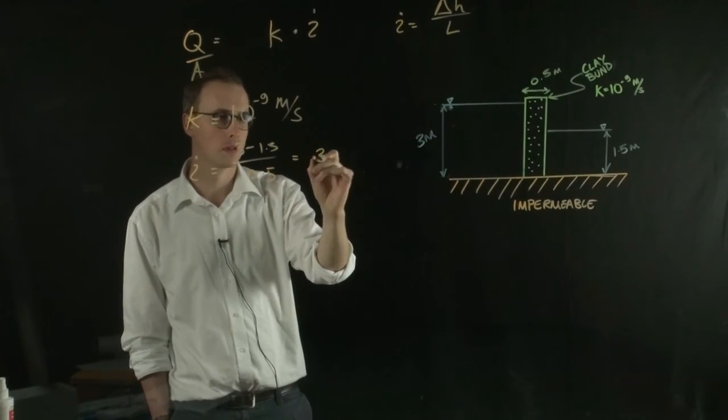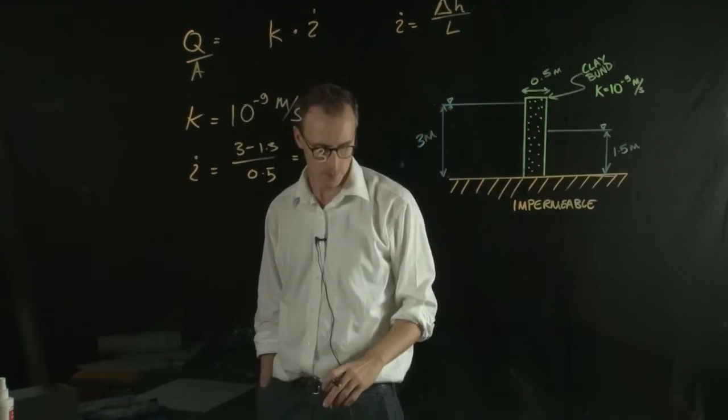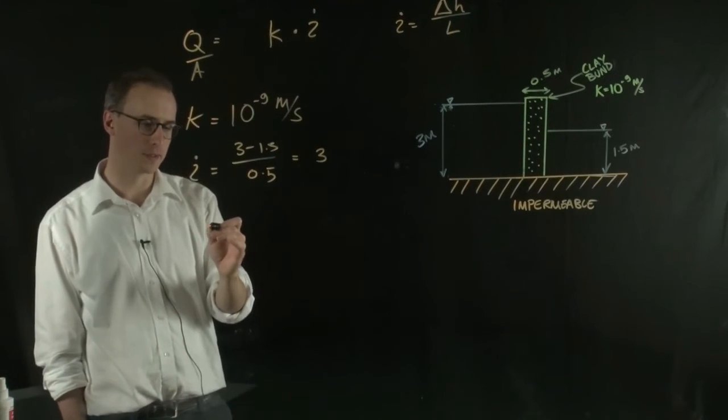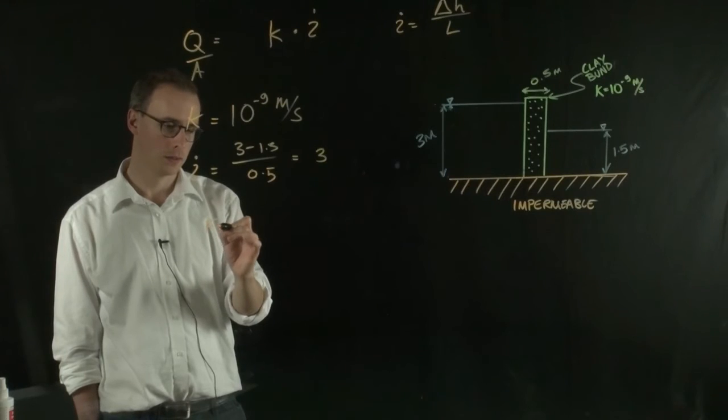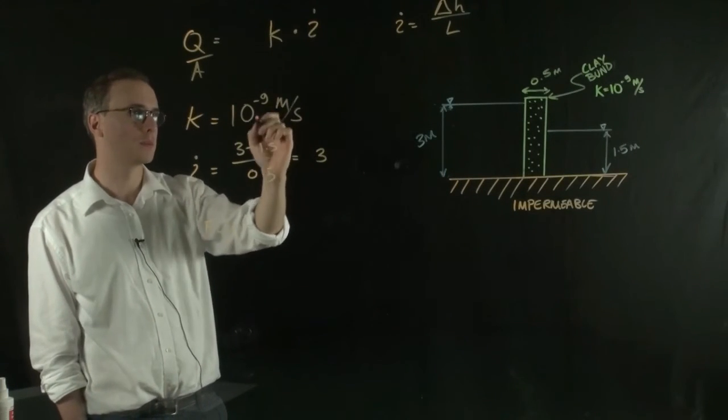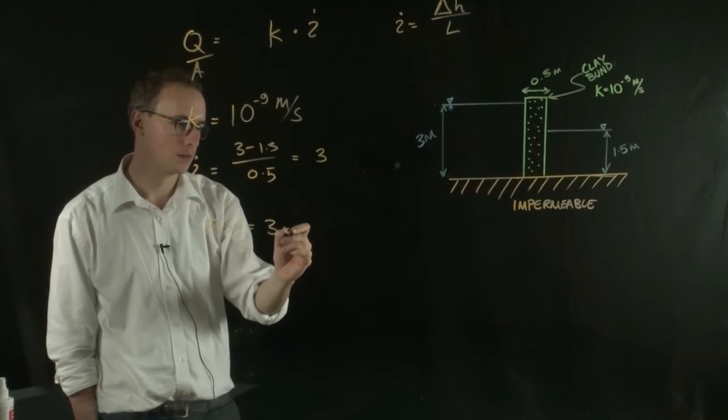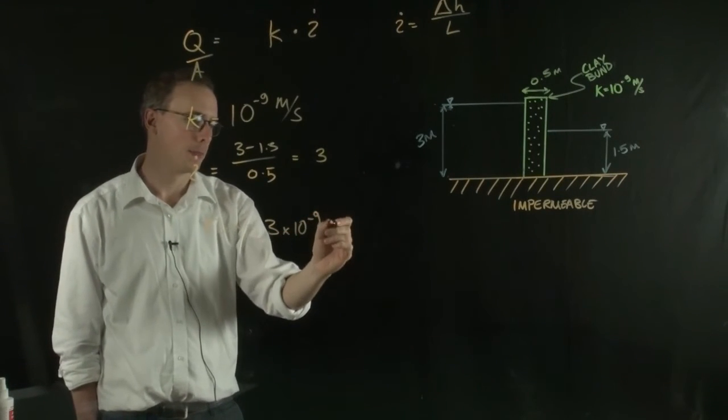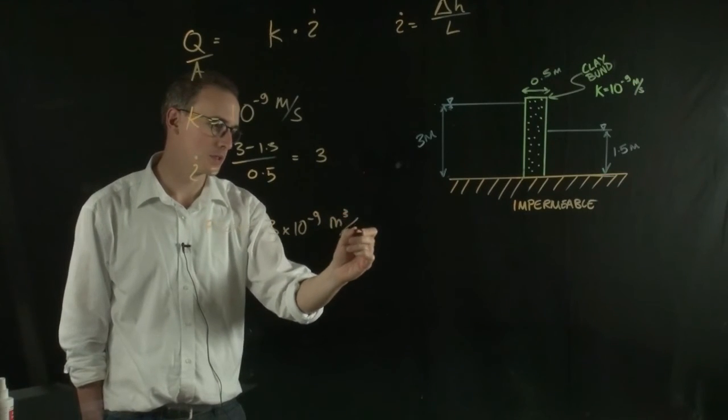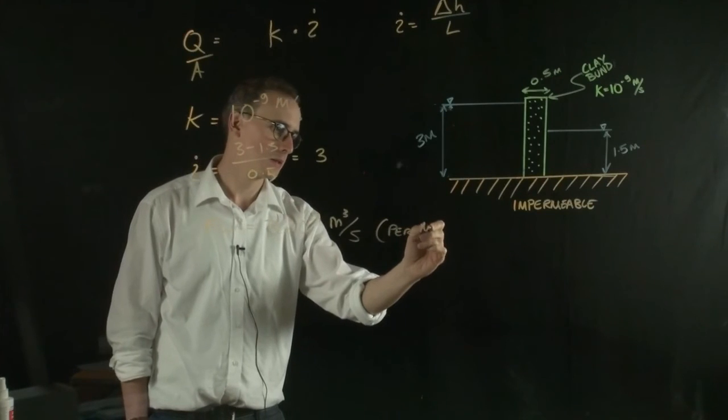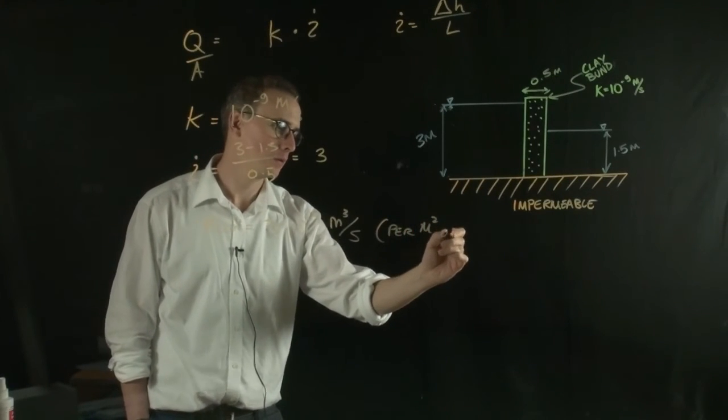So that's equal to 3. So for every metre squared of embankment, the flow is equal to 3 times 10 to the minus 9 metres cubed per second per metres squared of bund.